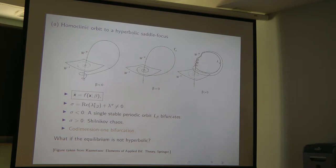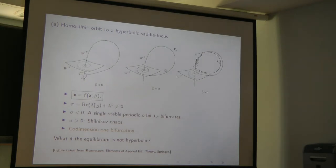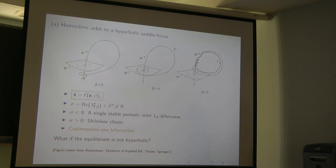There is also a second option when sigma is positive, in which case chaotic dynamics are present at the moment of the bifurcation when beta equals zero. This chaotic object fills a tubular neighborhood of the homoclinic orbit, and it is robust in the sense that when the homoclinic loop is broken, the chaotic object persists on both sides of the bifurcation. This is a codimension-1 phenomenon requiring variation of a single parameter.